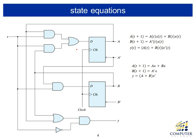So given a logic diagram, what are the state equations? Remember the behavior of a D flip-flop: the output, labeled A, is the same as input D on the next clock tick. Currently output A has a certain value, but that value will change on the next clock tick to whatever is currently on input D. That's the behavior of a D flip-flop.